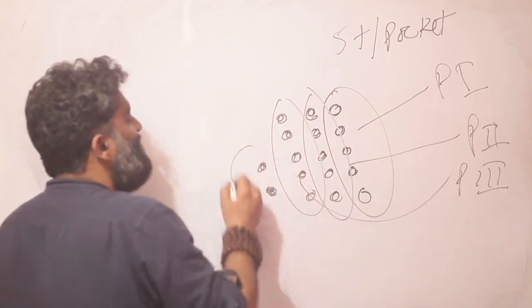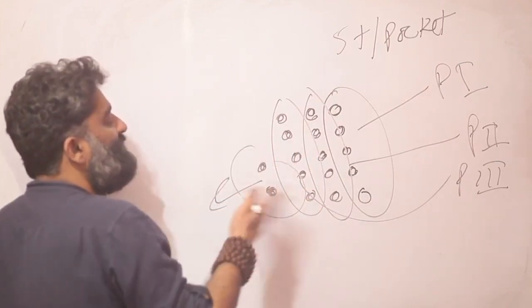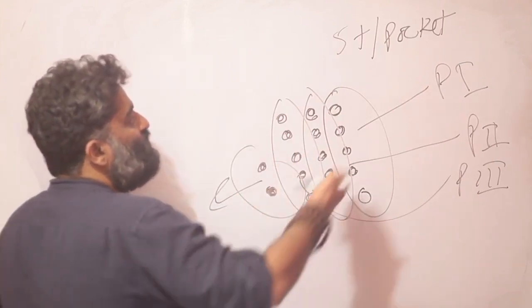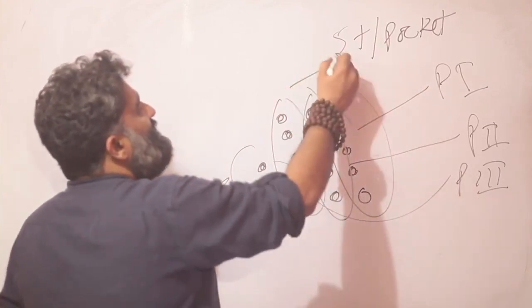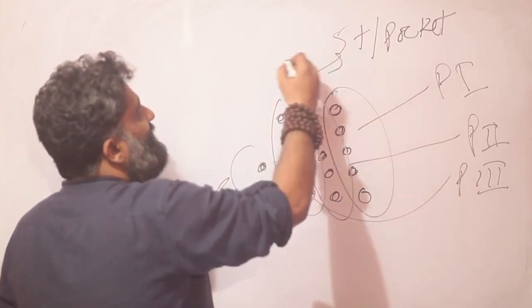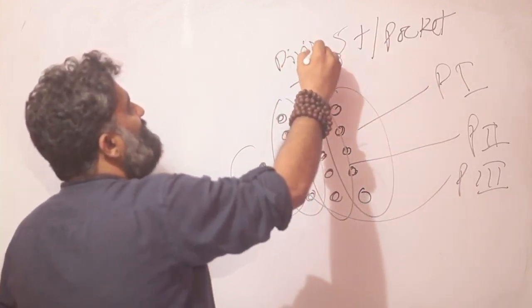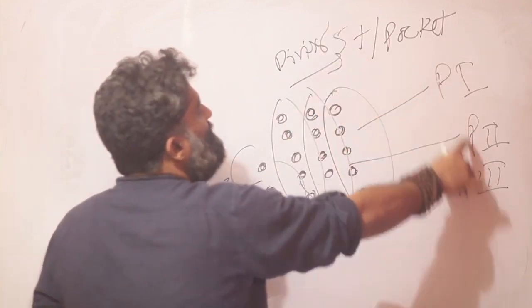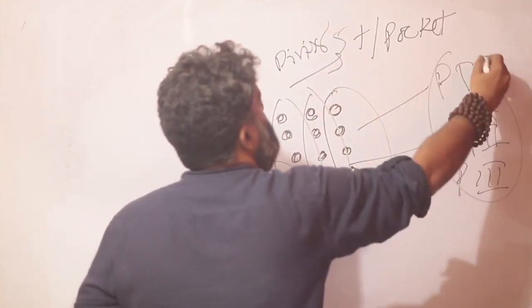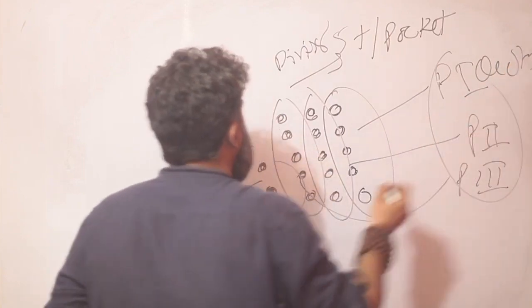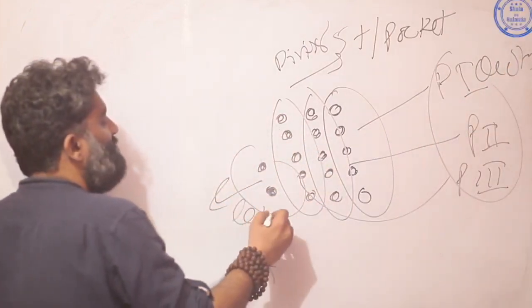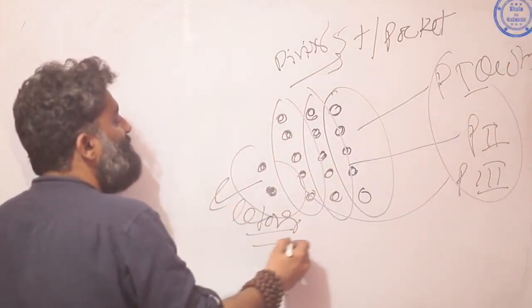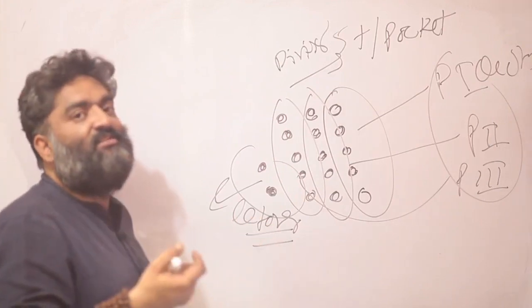So once again in this story, this 5 toffees per packet is our divisor. The number of packets is our quotient and the leftover is the remainder as suggested in the term remaining.